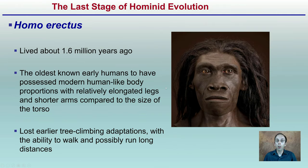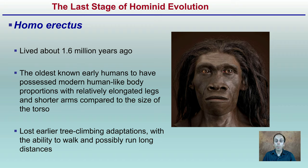Homo erectus lived about 1.6 million years ago and was the oldest known early human to possess modern human-like body proportions, with relatively elongated legs and shorter arms compared to the size of the torso. This means they lost earlier tree-climbing adaptations, gaining the ability to walk and possibly run long distances — making them more suited for long-distance travel on land versus efficiently climbing trees.